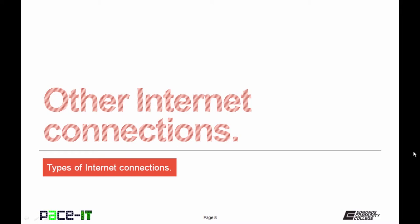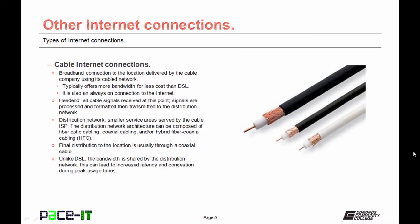Cable is a broadband connection delivered by the cable company using their own network. They typically offer more bandwidth for less cost than DSL, and it's also an always-on connection to the internet. The cable signal is delivered to what's called the head end, where all cable signals are received, processed, formatted, and then transmitted to the distribution network — a smaller service area served by the cable ISP. The distribution network architecture can be composed of fiber optic cabling, coaxial cabling, or a hybrid fiber coaxial cabling network, an HFC network.